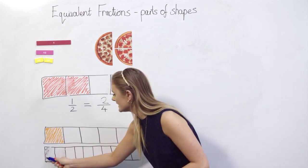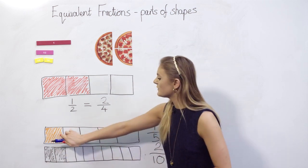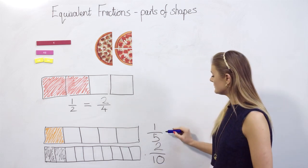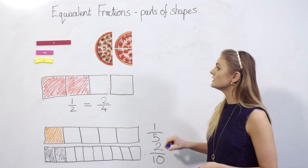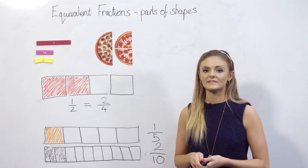It's really clear to see if I were to shade in two tenths that refers to the same amount of the whole as one fifth. So we can say one fifth is equivalent to two tenths. These are just some ways we can explore equivalent fractions using shapes.